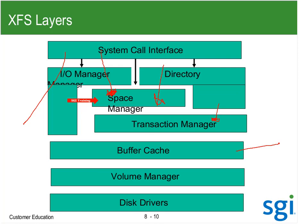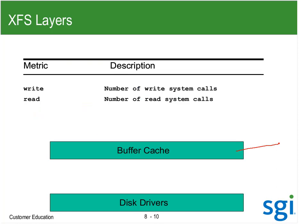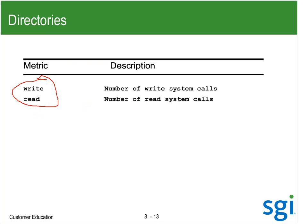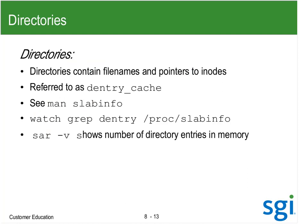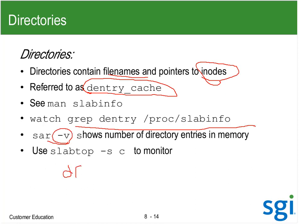From there we go into our page cache, buffer cache, volume manager, and disk drivers. For basic PCP, we do track the number of read and write system calls. Directories contain the file name and a pointer to the inode — referred to as dentry_cache within the slab. You can watch it with SAR-V to show how many directory entries are in memory, and df-i to show what's out on disk.